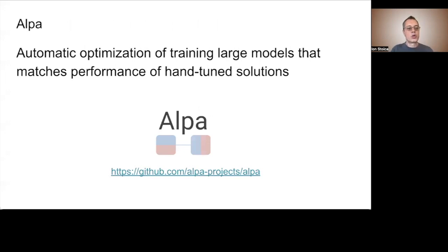In addition, in this tutorial, you'll also learn about Alpa, the first fully automatic optimizer for training large models that can match the performance of existing hand-tuned solutions. It's the system that we have developed at Berkeley over the past two years.